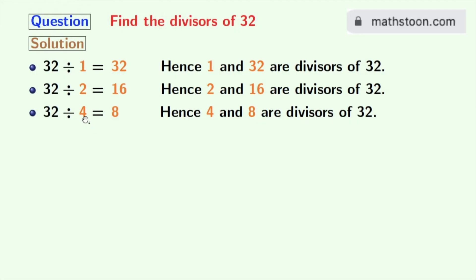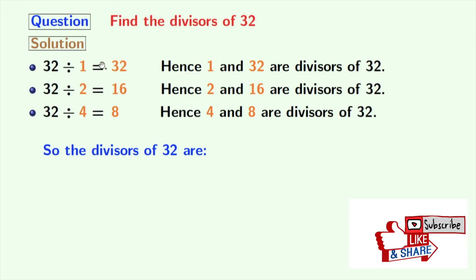Now, there is no number between 4 and 8 which can divide 32. So, we will stop right now. Now, look that we have all the divisors of 32 in orange colors.